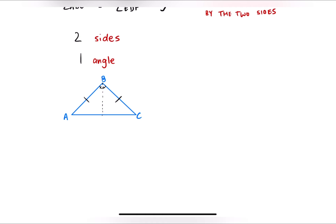So, if these two angles are equal, what we need to prove — we need to prove two things. Number one, let's name this point D. We must prove that AD equals DC. And the second thing we have to prove is that angle ADB equals angle BDC, and both equal 90 degrees — meaning BDA and BDC are both right angles.